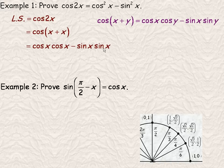And so this is cos x times cos x, which is actually cos²x, and sin x times sin x is sin²x, and that's what we wanted to show that cos 2x is equal to.